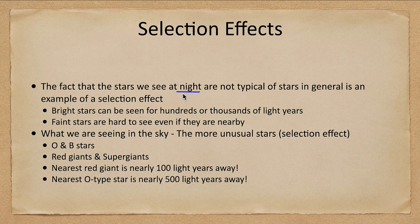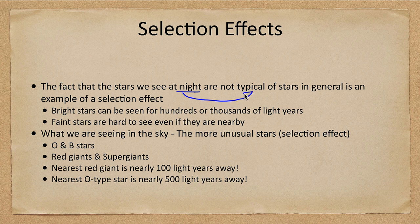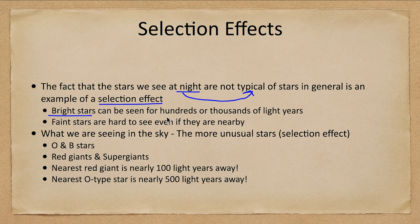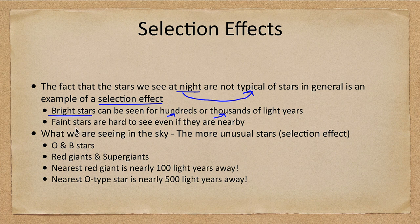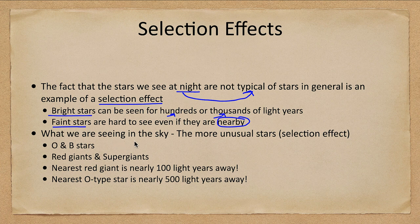Since the stars that we see in the night sky are not typical stars, this is an example of what we call a selection effect. The bright stars can be seen for hundreds or even thousands of light years. Faint stars are hard to see even if they are close to us. So what we are seeing in the sky are the more unusual stars.